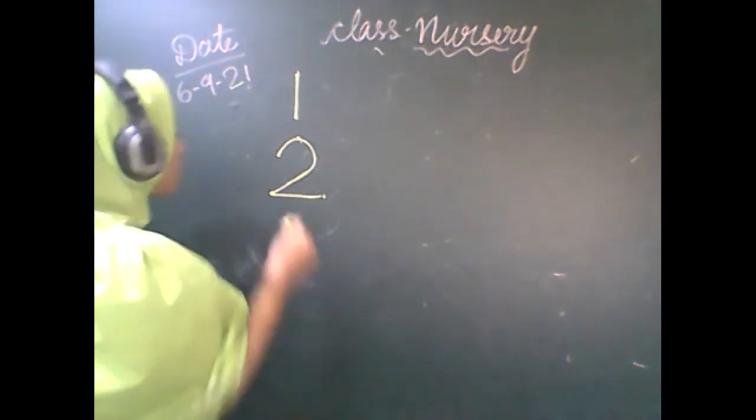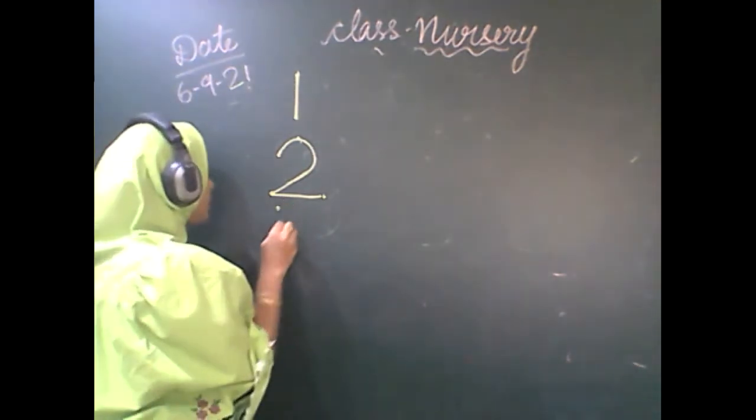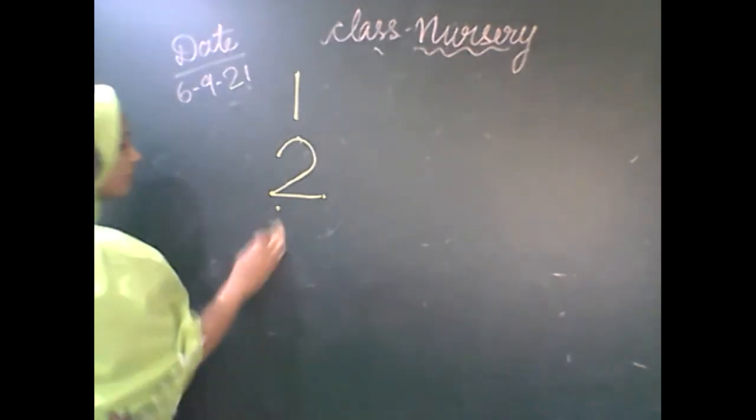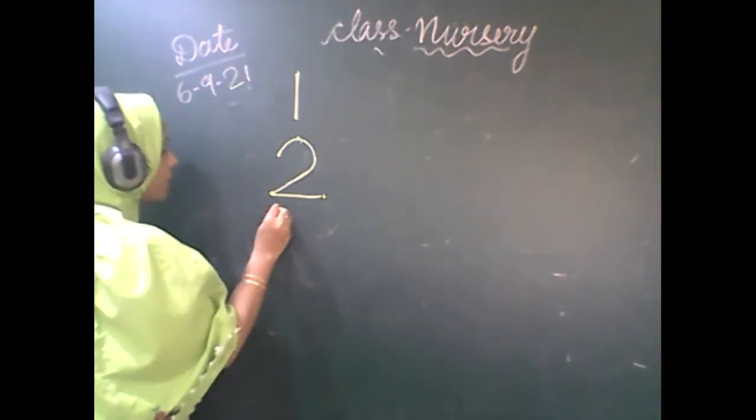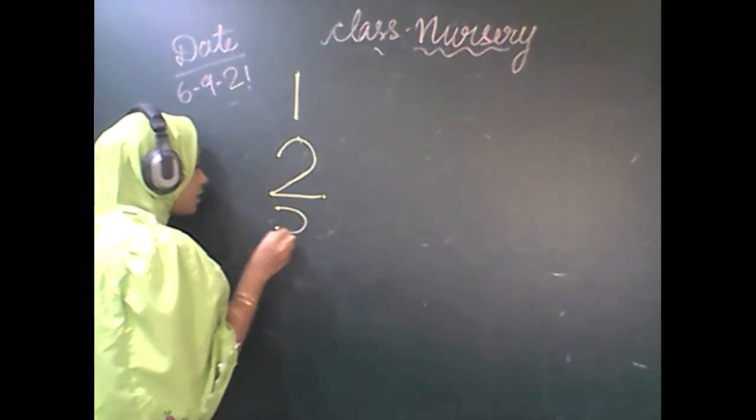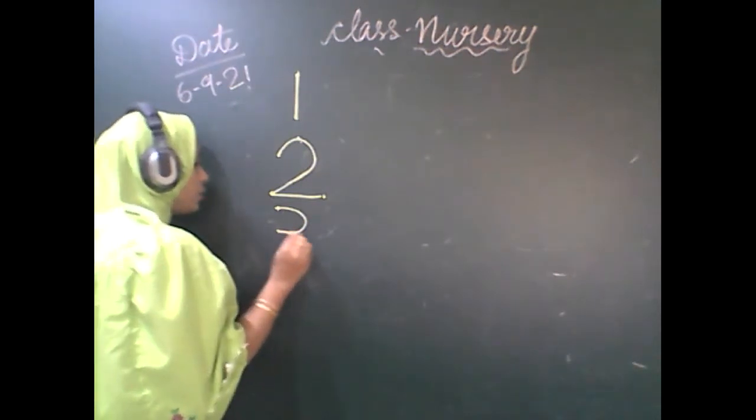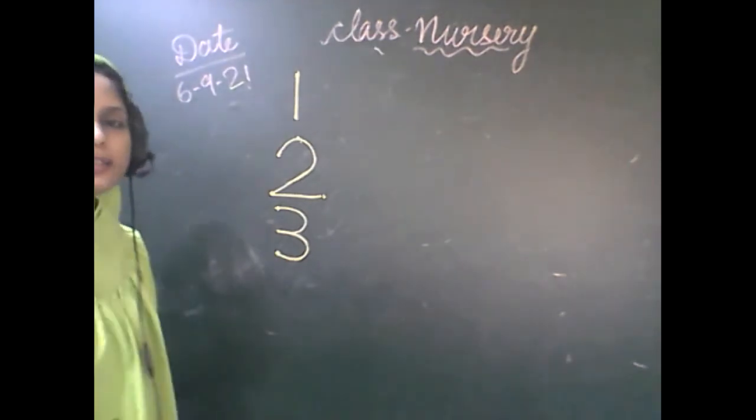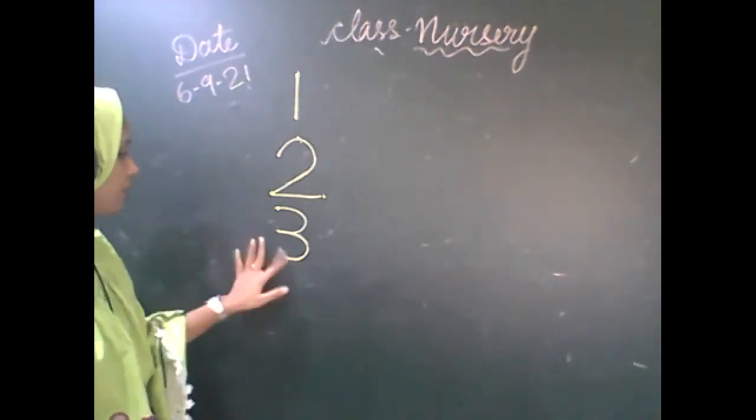Now after 2, you have to write number 3. Kids, see it now. Look how to make 3. You have to start from the upper dot, make a curve, inverted C, one more curve. 3. 3. Inverted C, one.